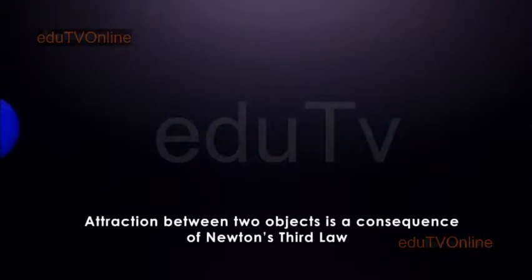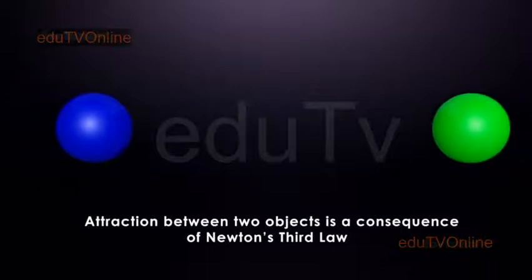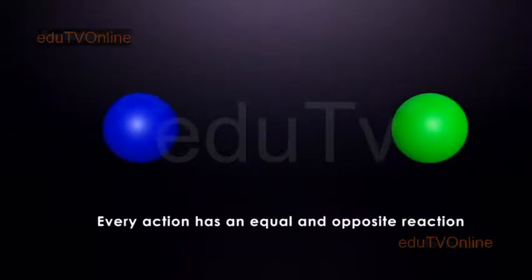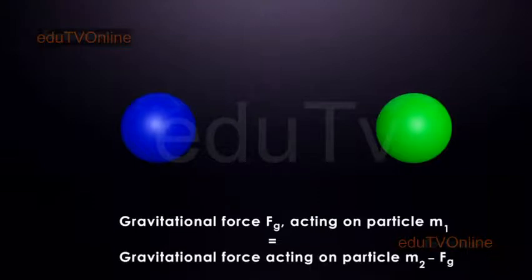The attraction between two objects is a consequence of Newton's third law, which states that every action has an equal and opposite reaction. In this case, the gravitational force FG acting on particle M1 is equal and opposite to the gravitational force acting on particle M2, minus FG.